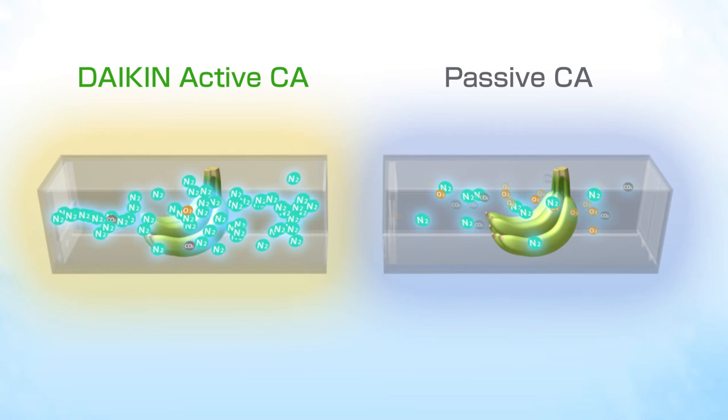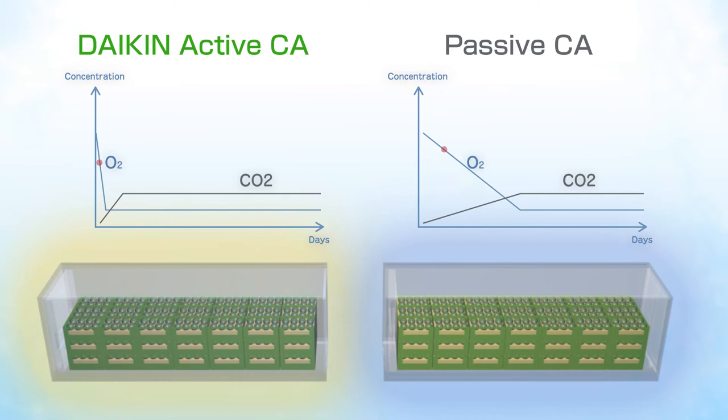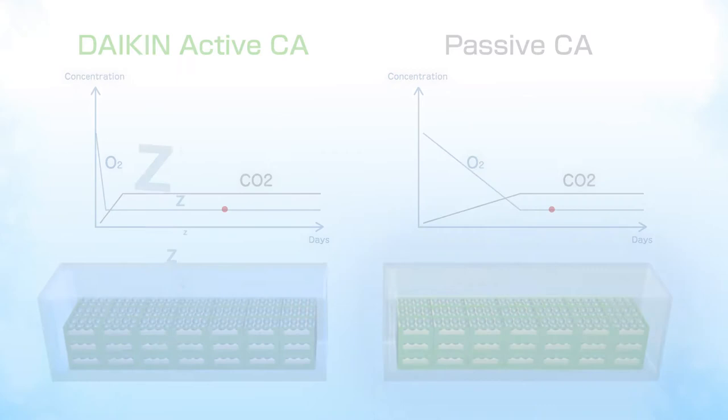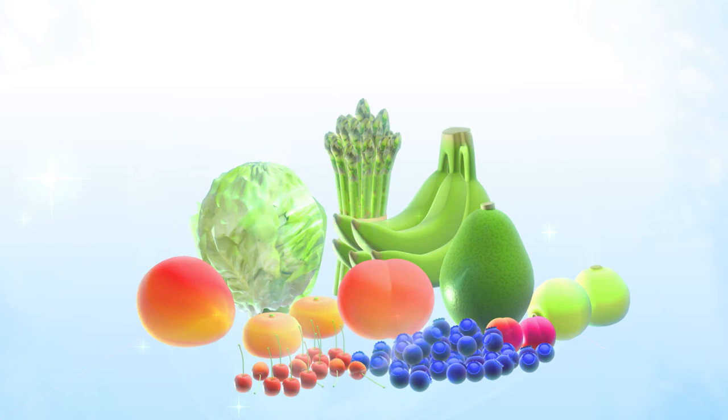This puts the produce to a sleep mode faster than the passive CA systems that rely on cargo respiration to bring the oxygen down. By putting the cargo to sleep fast, the shelf life is extended and water loss is prevented, making it viable for voyages that take a month or more.